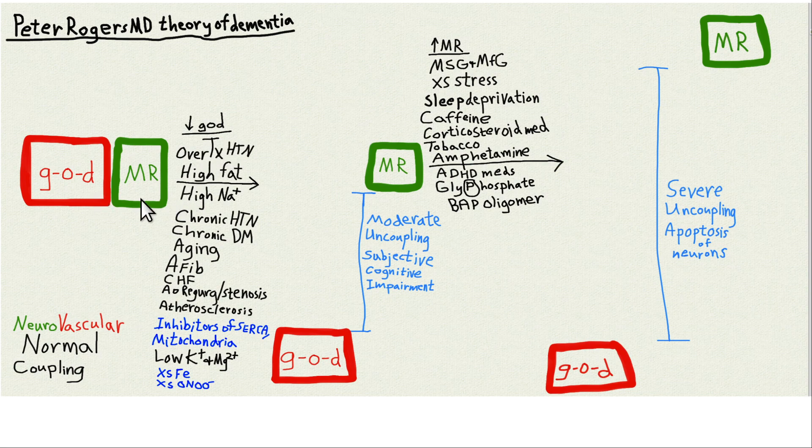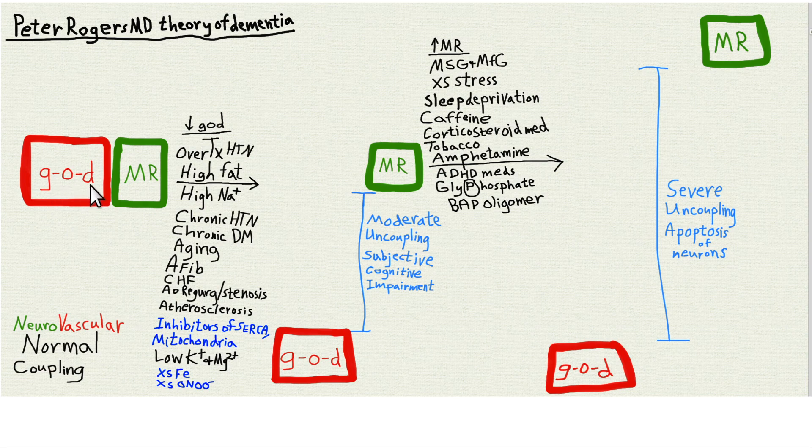Under normal conditions, you'll have normal neurovascular coupling, meaning that glucose and oxygen delivery, I kind of jokingly abbreviated G-O-D, which obviously can mean something else, but in our case, it's often abbreviated O-G-D, oxygen glucose delivery, but glucose oxygen delivery.